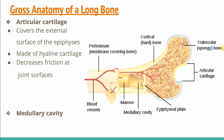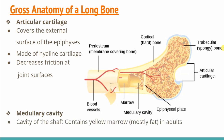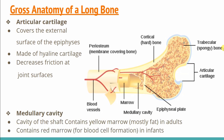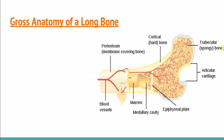Second, the medullary cavity, which you can see in the center of the bone — we call it the medullary cavity. What happens here is that marrow is present. The cavity contains yellow bone marrow in adults and red bone marrow in infants.